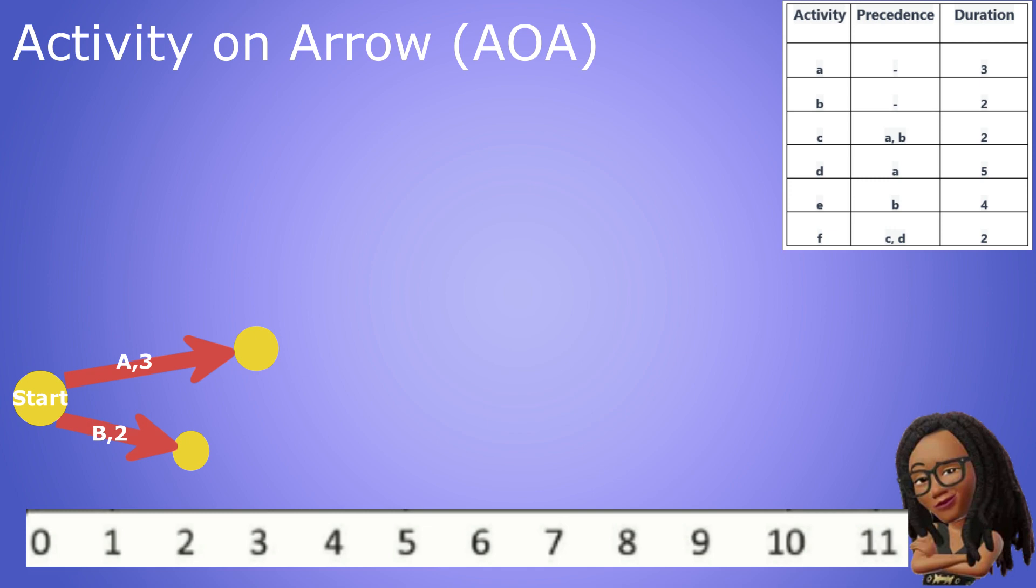We know activity C relies on both A and B to be finished before it can start. Even though B ends at day two, activity C still has to wait until day three when activity A is finished before it can start. With that knowledge we draw an arrow from A's terminating node to represent activity C. C has a duration of two days so we represent that on the timeline by terminating the arrow at day five.